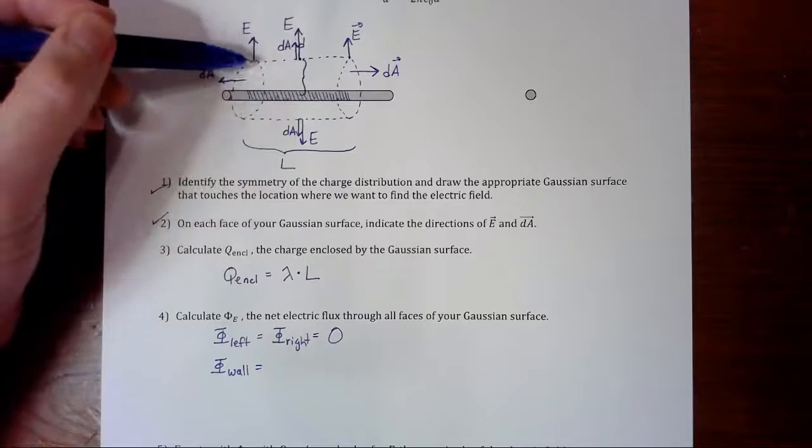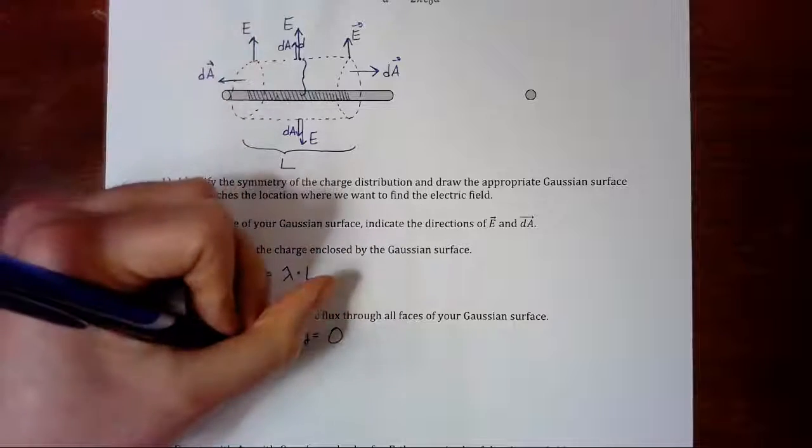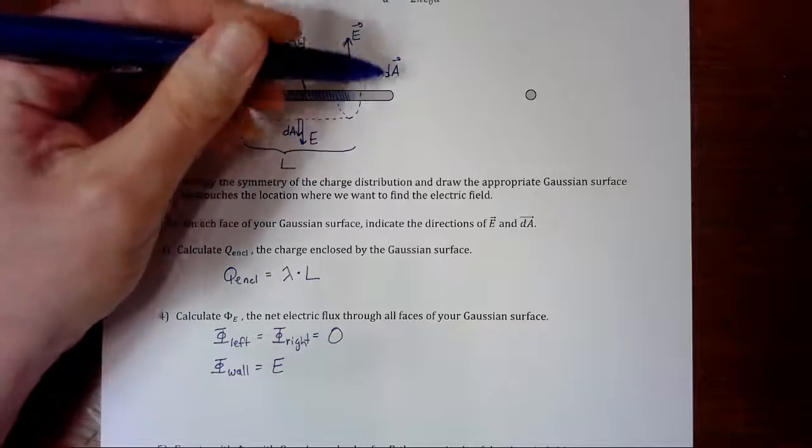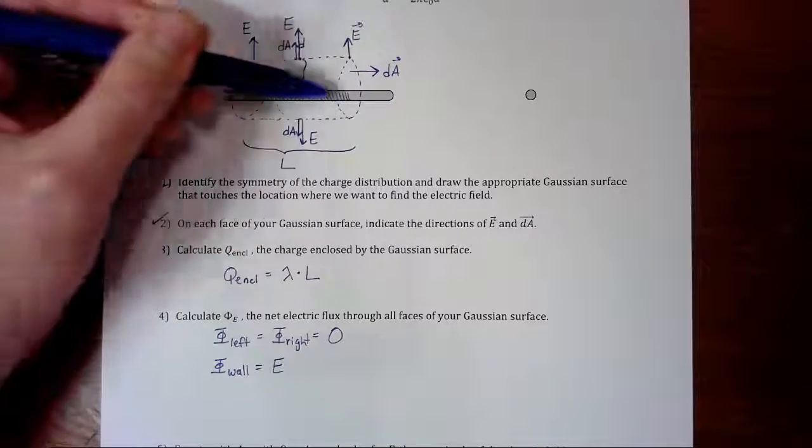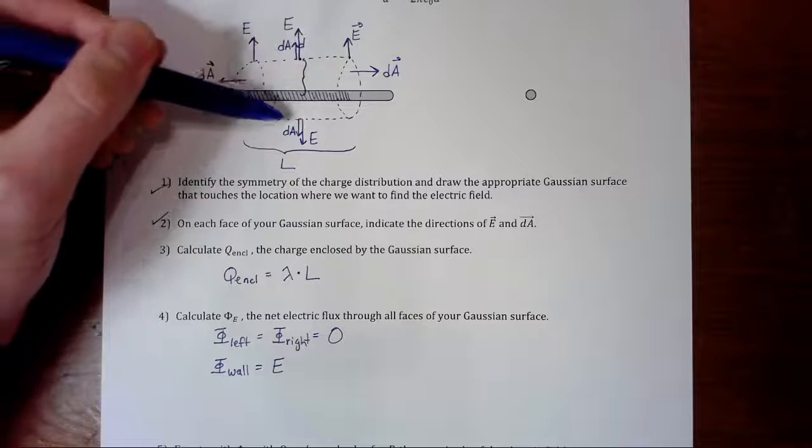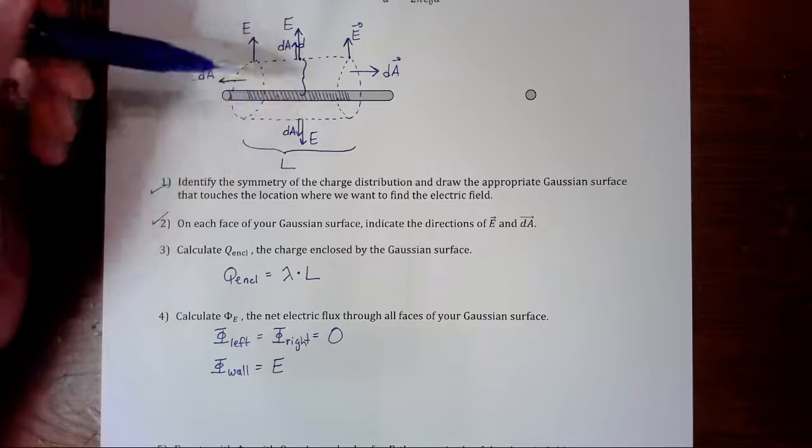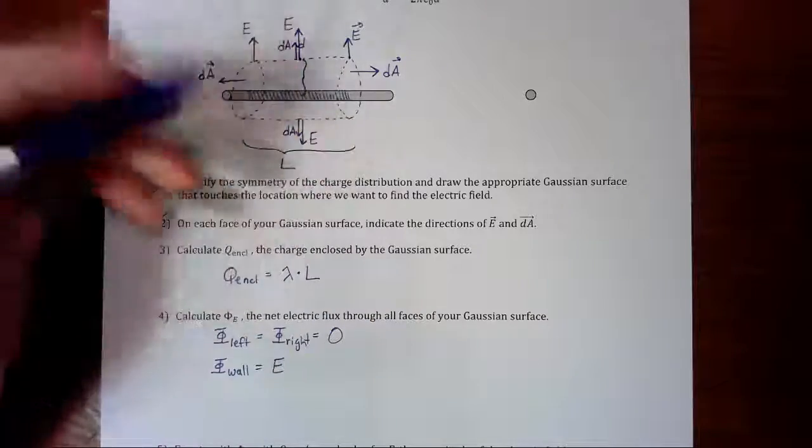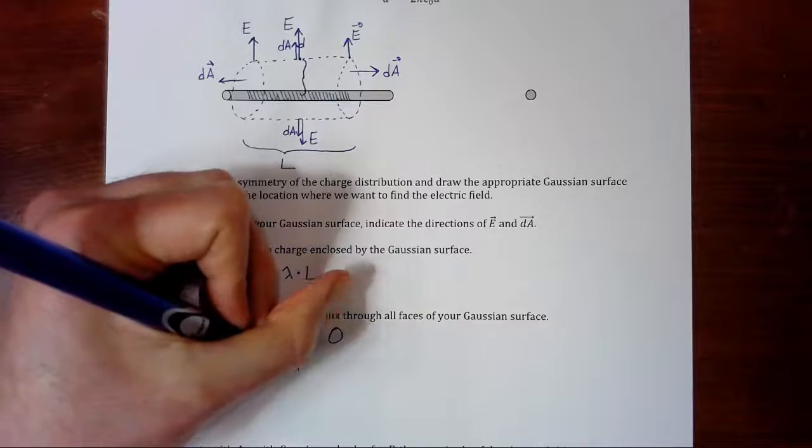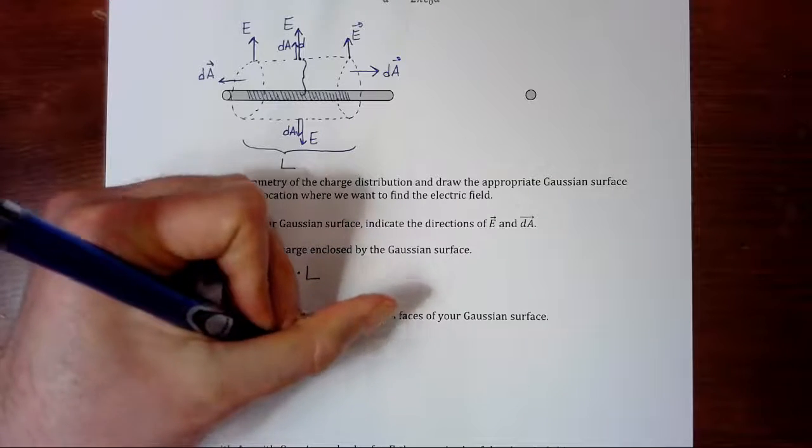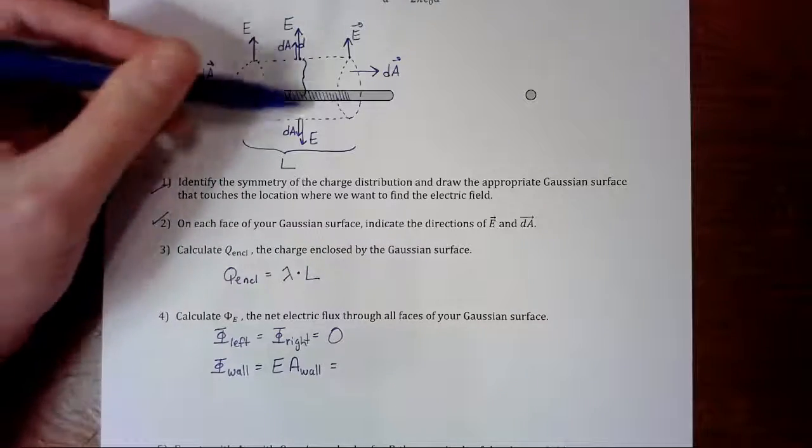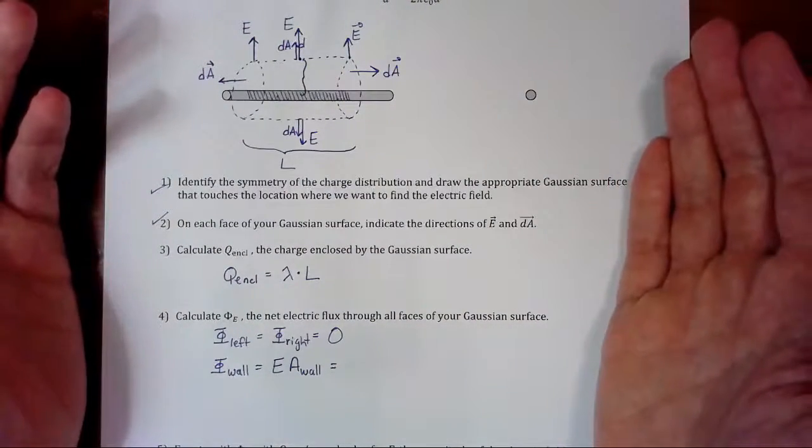And everywhere along the wall, the electric field is the same size, E, as long as this imaginary cylinder is centered around the rod. Then everywhere along the wall, the electric field is going to have the same value. And the area of the wall, you just have to figure out what that is. Now, if you think about a cylinder, the area for the wall of a cylinder, you could think of it as like unfolding a piece of paper.